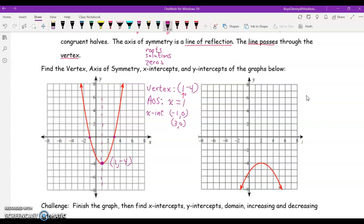Last thing we want to identify is our y-intercepts. There's only 1. And the y-intercept would be right down here, and that would be 0 negative 3. Okay? Alright, pause the video, and you try the next one.